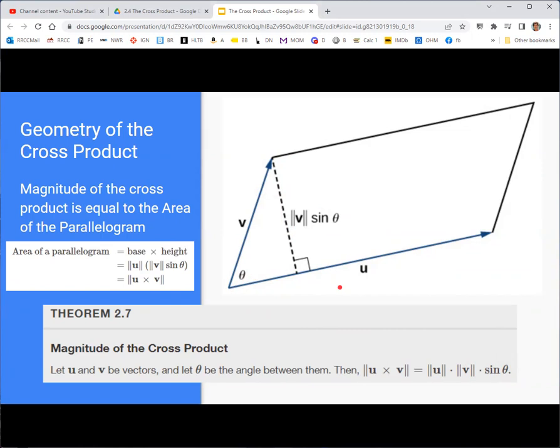We had a formula for the cosine of theta in terms of the dot product. Well, this is a formula for the sine of theta in terms of the cross product. The magnitude of the cross product is the magnitude of u times the magnitude of v times the sine of theta.